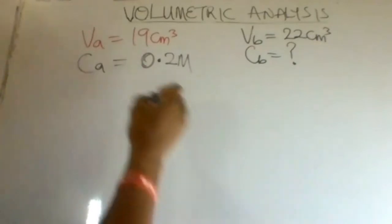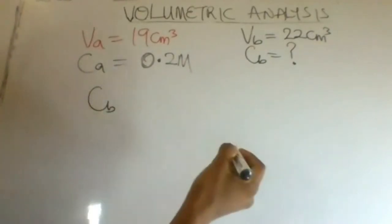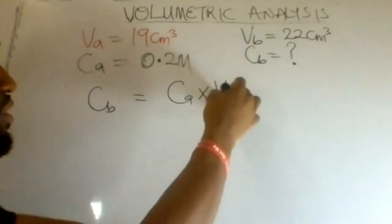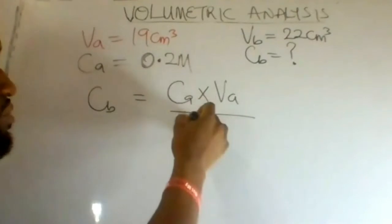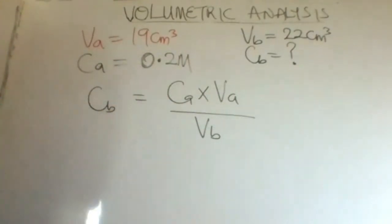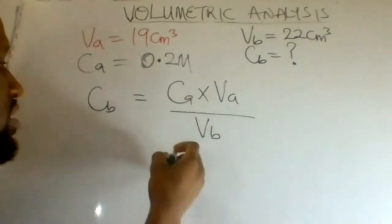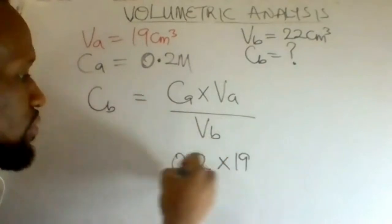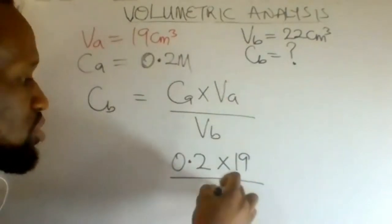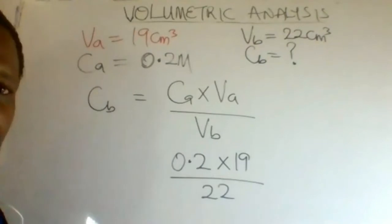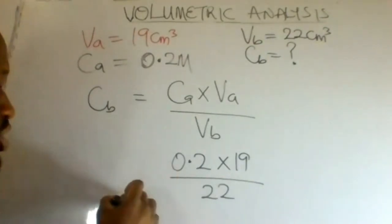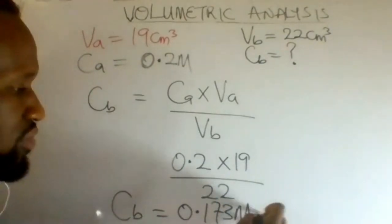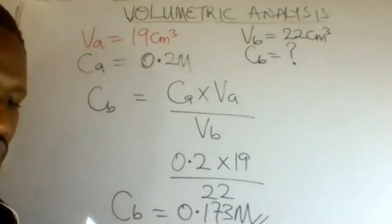To calculate the concentration of the base, sodium hydroxide: concentration of the acid multiplied by volume of the acid, divided by volume of the base, gives us the concentration of the base. This is 0.2 multiplied by 19, divided by 22. The concentration of the base equals 0.173 molar concentration of sodium hydroxide.